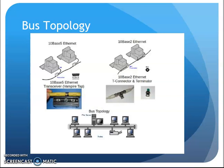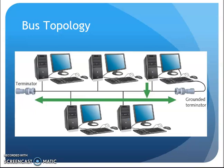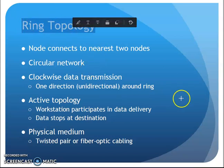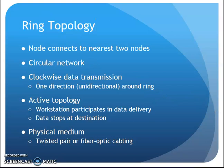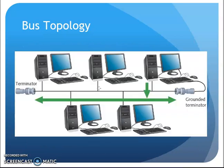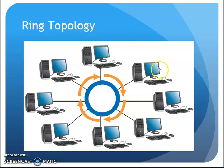This was Ethernet back in the 80s ballpark, maybe 80s to 90s. At the same time, IBM, Apple, and other companies were doing their own thing. IBM was doing its own network — a token ring network — using a ring topology.